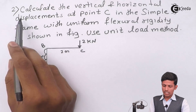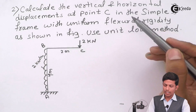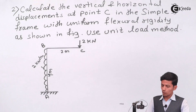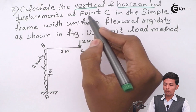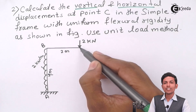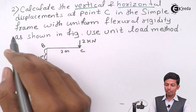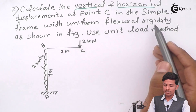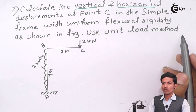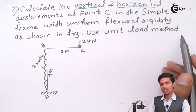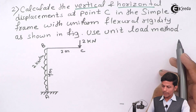This is a question given in the exam. We have to calculate the vertical and horizontal displacement at point C — both of them. In the simply supported frame with uniform flexural rigidity as shown in the figure, use the unit load method. That means we have to apply 1 kN in the horizontal direction and 1 kN in the vertical direction at C.